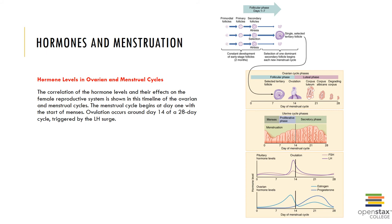Meanwhile, mucus secreted by the cervix becomes viscous, creating a cervical plug. The secretory phase begins at ovulation and persists as long as the corpus luteum remains intact. When the corpus luteum stops producing stimulatory hormones, a new uterine cycle begins with the onset of the next menses.